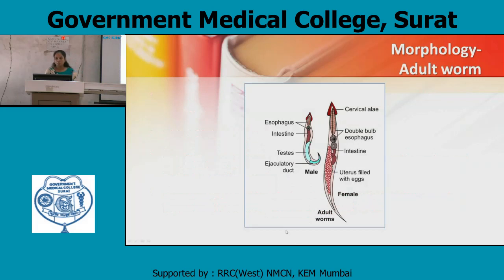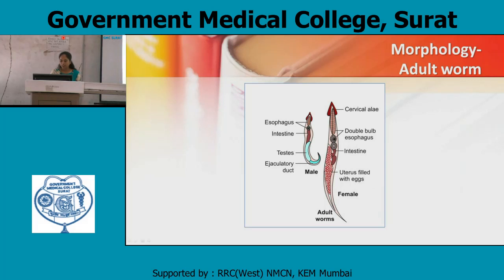Morphology — adult form, male and female. It has a double-bulb esophagus, intestine, and testis with ejaculatory duct in the male. The female has cervical alae present at the double-bulb esophagus level, intestine, and uterus filled with eggs.